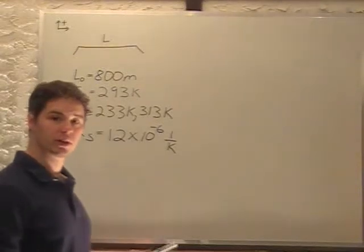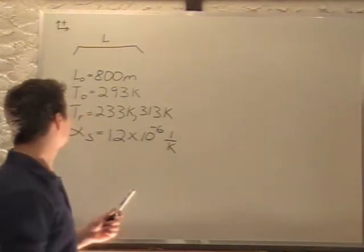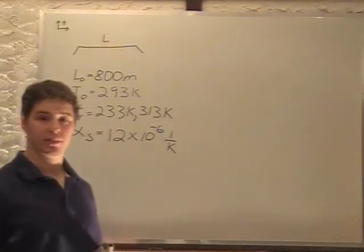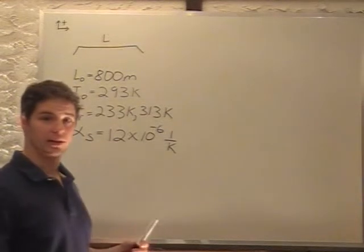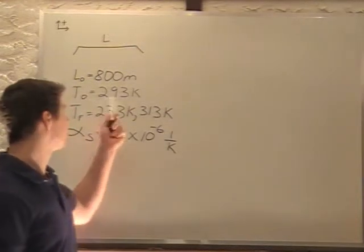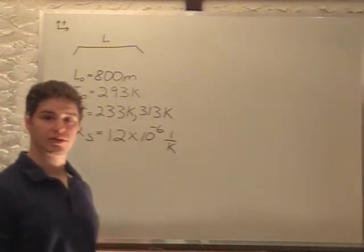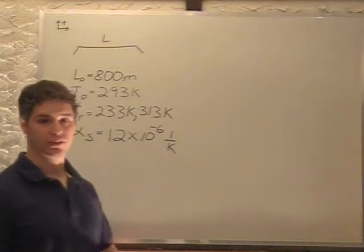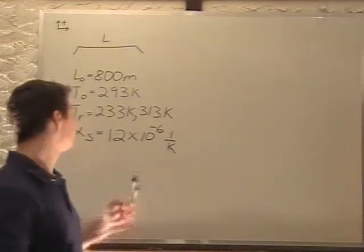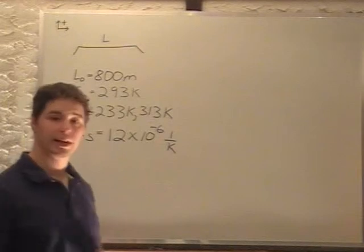In this problem we have a steel toll bridge that is 800 meters long at a temperature of room temperature. That's plus 20 degrees Celsius, plus 273 is 293 Kelvin. We're told that it's subjected to temperatures of minus 40 degrees Celsius and plus 40 degrees Celsius. If we convert those to Kelvin we get 233 Kelvin and 313 Kelvin.